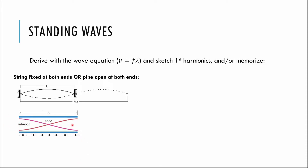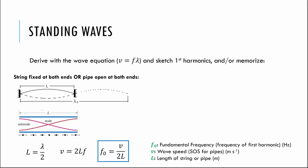For the open pipe you have a node between two antinodes — either way you still get half a wavelength. So set this up by saying the length of the string or pipe equals half a wavelength at the fundamental. Use the wave equation: wave speed equals frequency times wavelength. If the wavelength is 2L, multiply by frequency and solve for f to get the fundamental frequency. If you can sketch the first harmonic, just use the wave equation and compare the length to the wavelength.